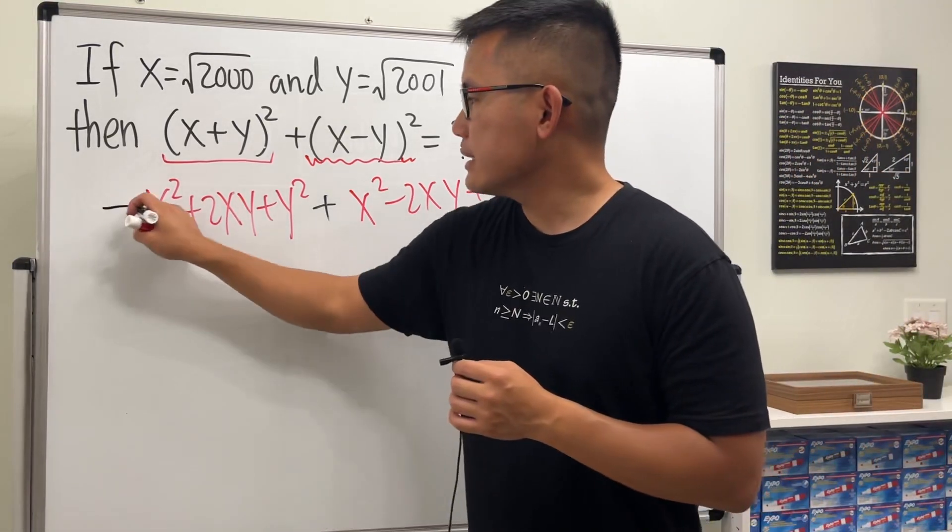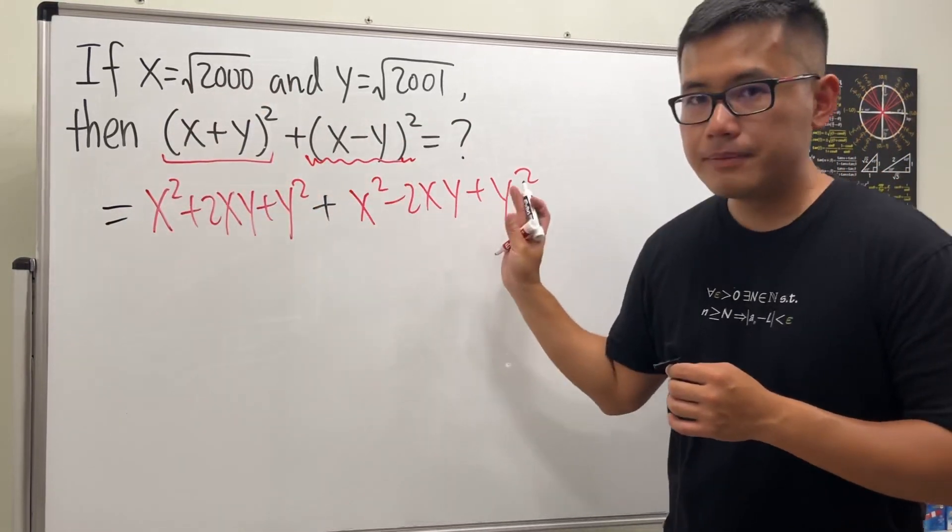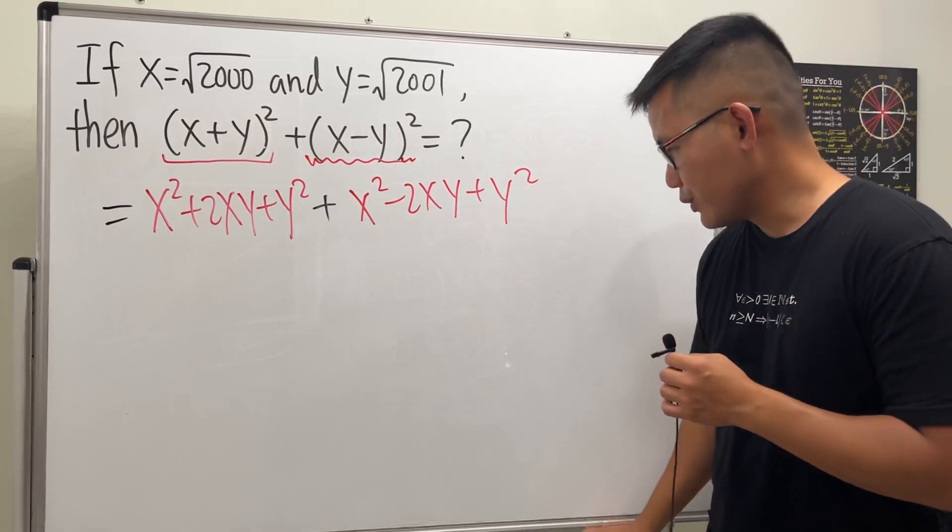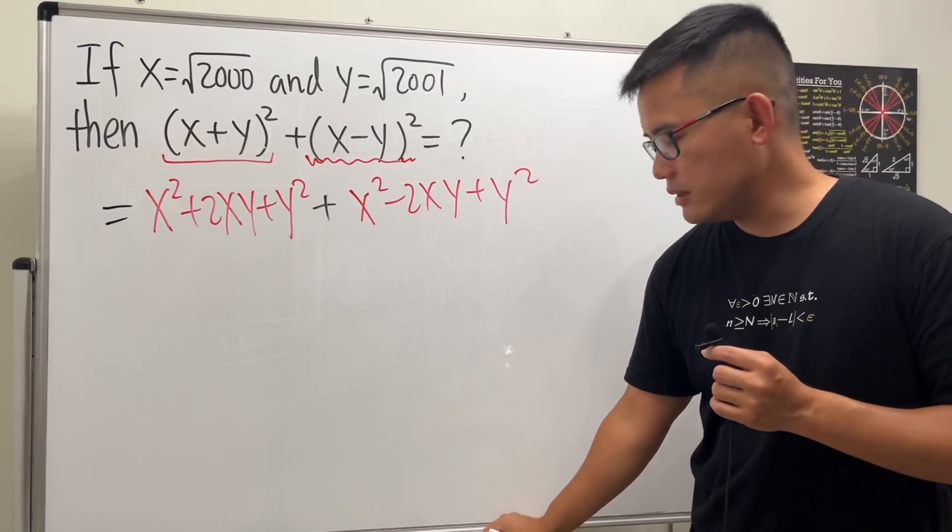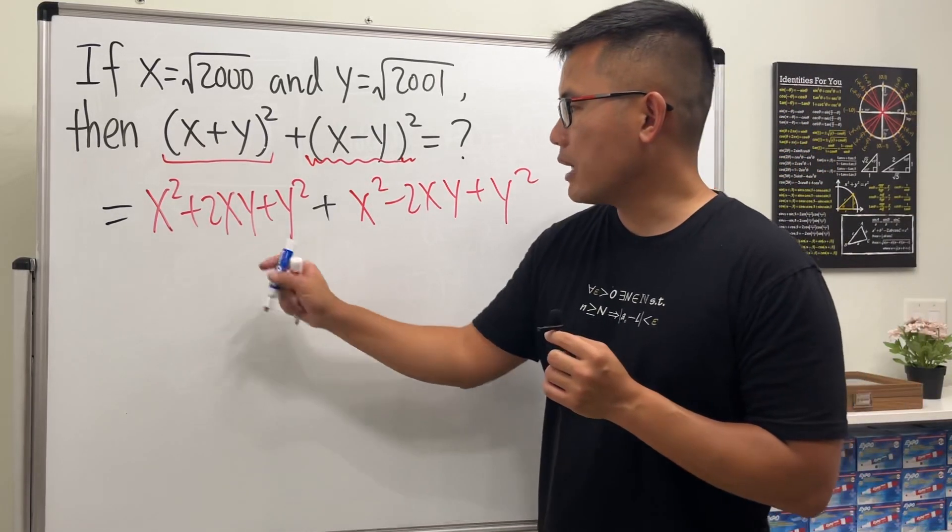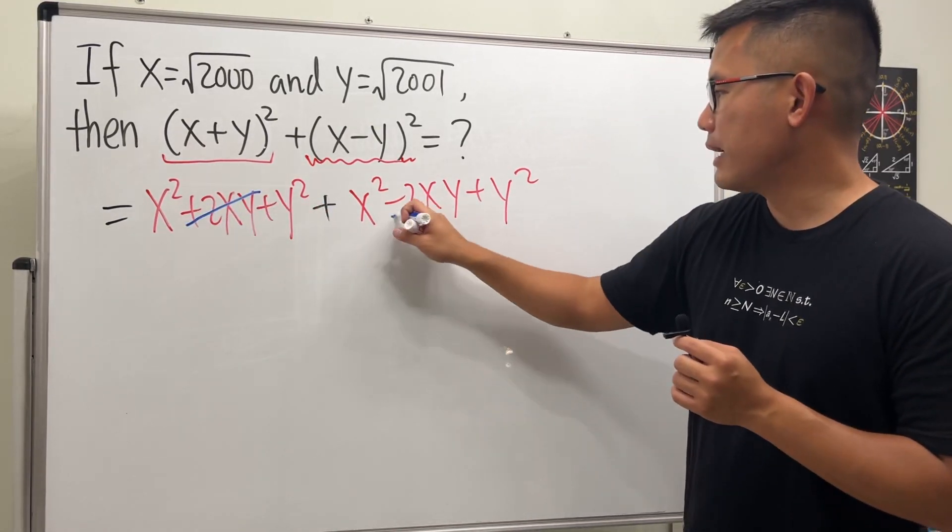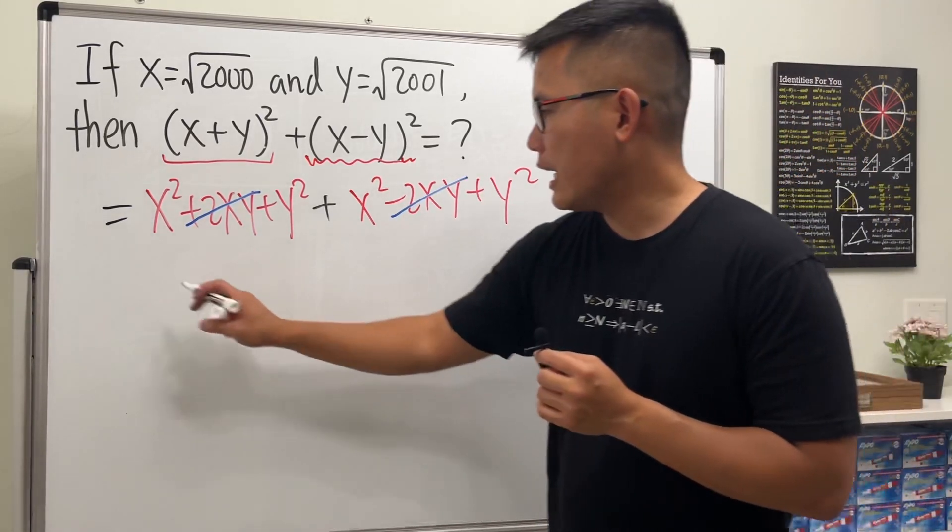Aha, so you see that this is equal to that. And the good thing is, what do we see? The 2xy and 2xy actually cancel, because this here is a positive 2xy and this right here is a minus 2xy. Perfect.